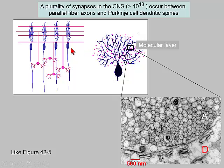If you look at the Purkinje cells sideways, all of those hands line up and look very thin. The cerebellar folia do twist and turn, so what is face-on from one view may be sideways from another. In an electron micrograph of the molecular layer, each roughly half-micron-diameter structure is in fact the axon of an individual granule cell — unmyelinated, packed as closely together as they can be.